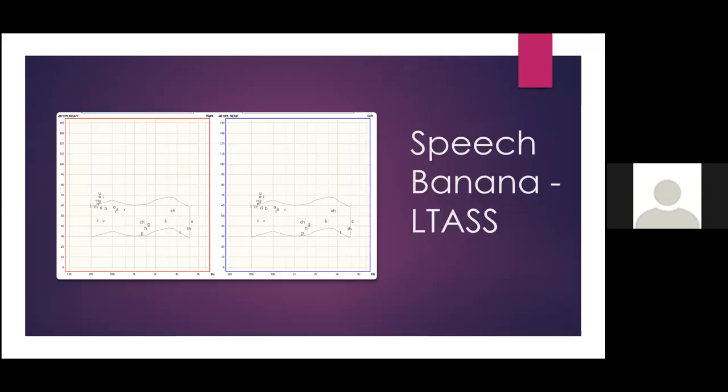So what does speech mapping mean? Here we've got a speech banana, which for a normal hearing listener shows two rectangles — one for the right and one for the left ear.